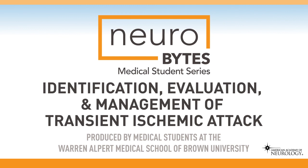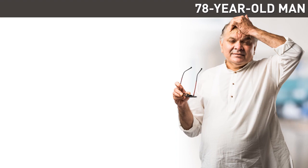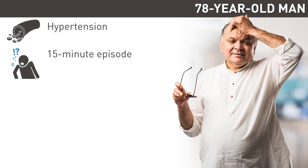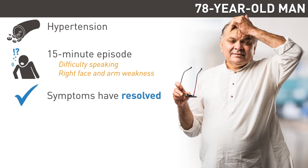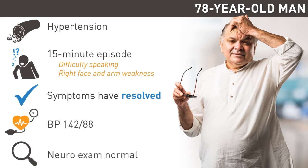Identification, Evaluation, and Management of Transient Ischemic Attack. A 78-year-old man with hypertension presents to the emergency department after a 15-minute episode of difficulty speaking and right face and arm weakness. His symptoms have completely resolved, and he feels as though he's back to normal. Vital signs are notable for a blood pressure of 142 over 88. Your neurological exam is normal. You are concerned that he has had a transient ischemic attack. What do you do next?